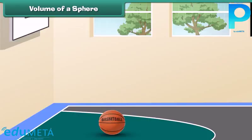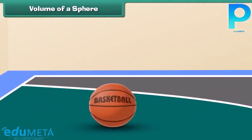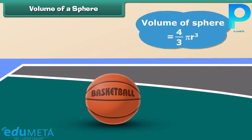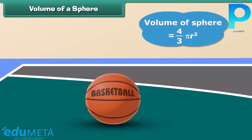What do we call this round ball? Yes, it's a sphere. It looks the same from every angle, doesn't it? The formula to find the volume of this sphere is V = 4/3 πr³.